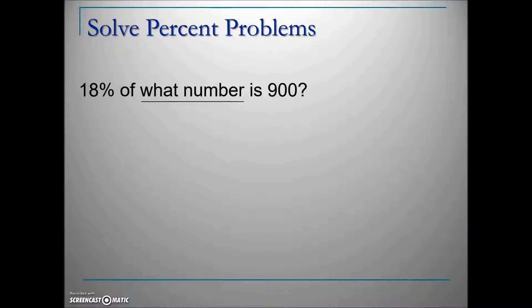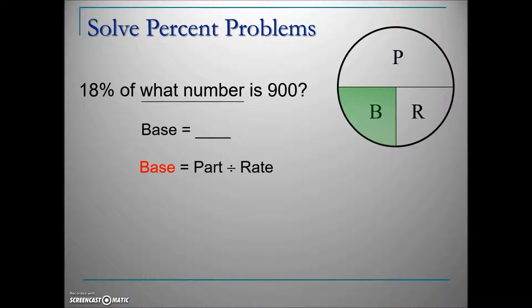Generic problems work the same way. This example: 18% of what number is 900? The percentage is our rate. Using that hint, the number following 'of' is our base—that's what the question asks. We're looking for the base. Cover up the base in the formula circle, leaving P over R: part divided by rate. Convert the percentage to a decimal, divide, and the answer is 5000.